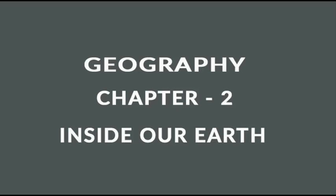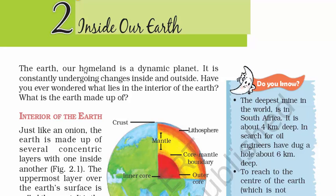Hello everyone, I'm back with another chapter of Geography, class 7, NCERT. Chapter 2: Inside our Earth. There is always a constant change that is going on underneath our feet, that is inside the earth. We may not notice it from outside, but there is a constant change going on. So this chapter is all about the interior of the earth.